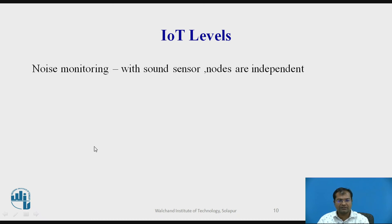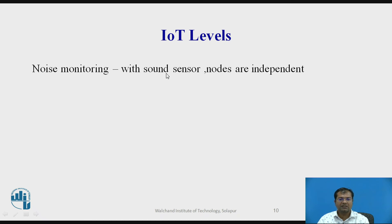The example for IoT level 4 is noise monitoring. Sensors are kept in different locations, and with the help of these sensors, sound is sensed. If it crosses the given threshold, then there will be a warning message. These nodes are independent in nature.